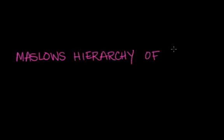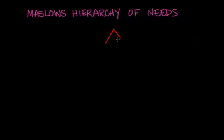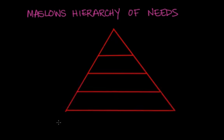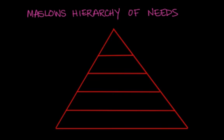Building off the five approaches in understanding motivation, or the five schools of thought like we talked about in the last video, let's take a deeper look at Maslow's hierarchy of needs. It's actually broken down into a pyramid, created by a famous psychologist named Abraham Maslow. Maslow said that we have needs that need to be fulfilled in a specific order, starting from the bottom of the pyramid all the way to the top.